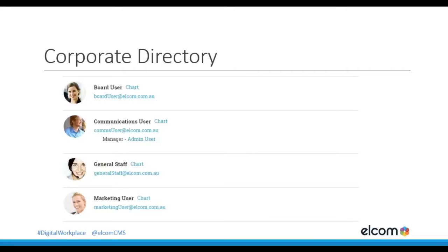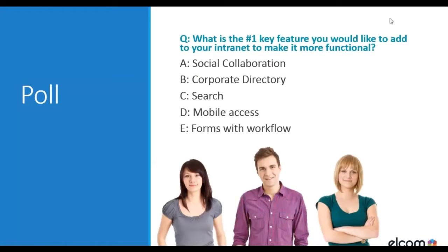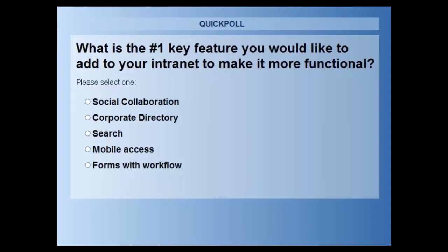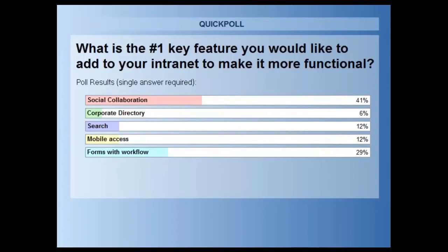I have another poll I'd love to put on the screen. The question is: what is the number one key feature you would like to add to your intranet to make it more functional? The five options are: social collaboration, corporate directory, search, mobile access, and forms or workflow. Thank you very much everyone for adding those interesting responses.